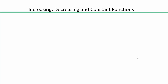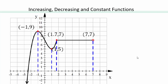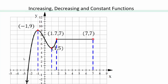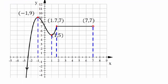Let's establish the terminology before looking at graphs of functions. If you have a graph of a function and you look at it from left to right, you travel on the x-axis left to right. If the graph is rising, you say the function is increasing. If it's falling down, decreasing. If it stays flat, that means no two x-coordinates have different y-coordinates — they all have the same y-coordinate — you say the function is constant.